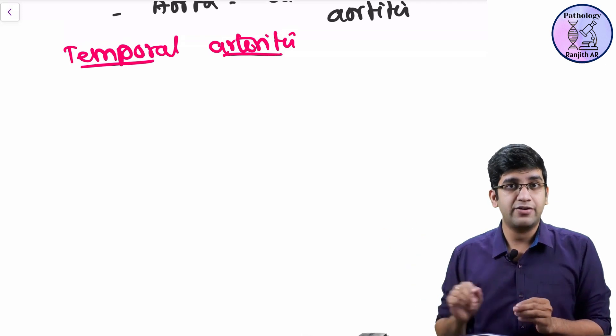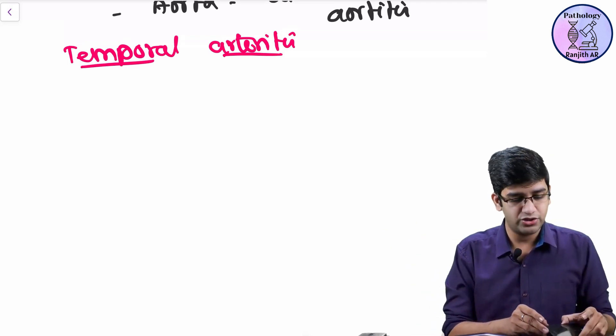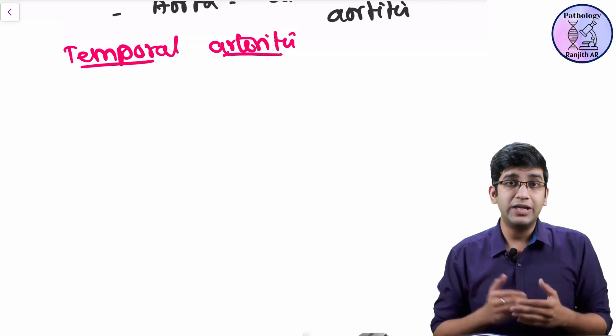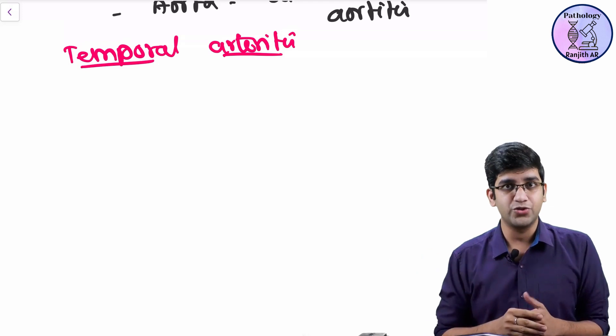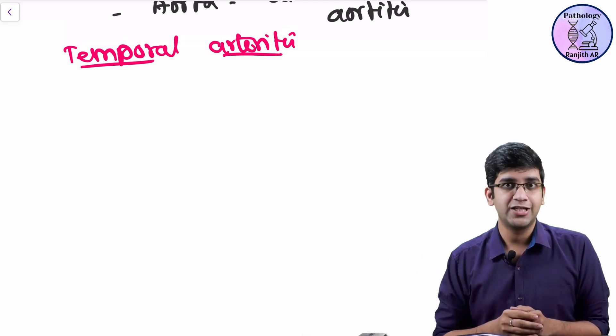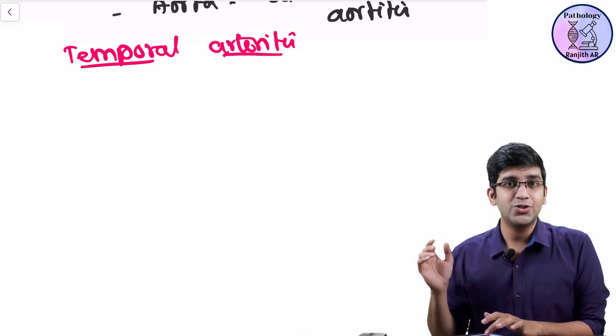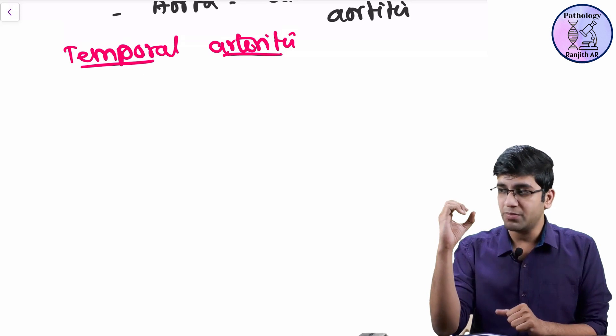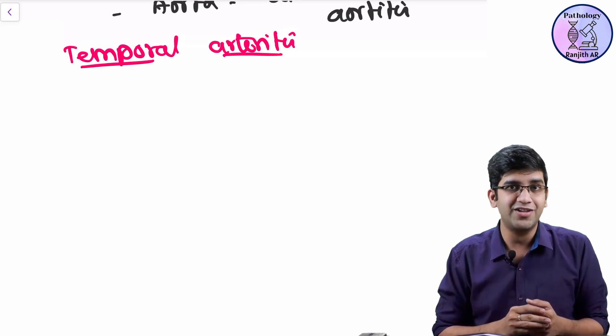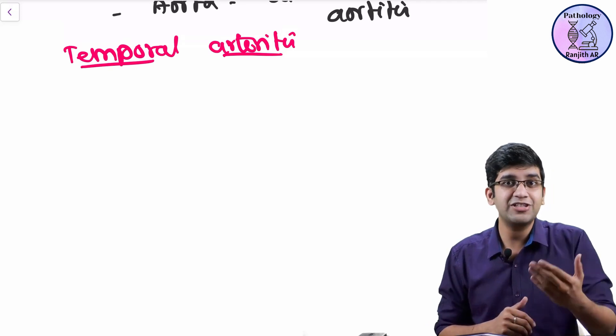Tissue destruction and healing by fibrosis. So am I right in saying that my temporal artery will have tissue destruction? Yes. Will it heal by fibrosis? It will heal by fibrosis. So it heals by fibrosis, my temporal artery will become thicker. Absolutely become thicker. When it becomes thicker, my lumen will become smaller. The lumen becomes smaller. Will that mean ischemic pain? Absolutely yes. Will the patient have pain in this area? Yes.